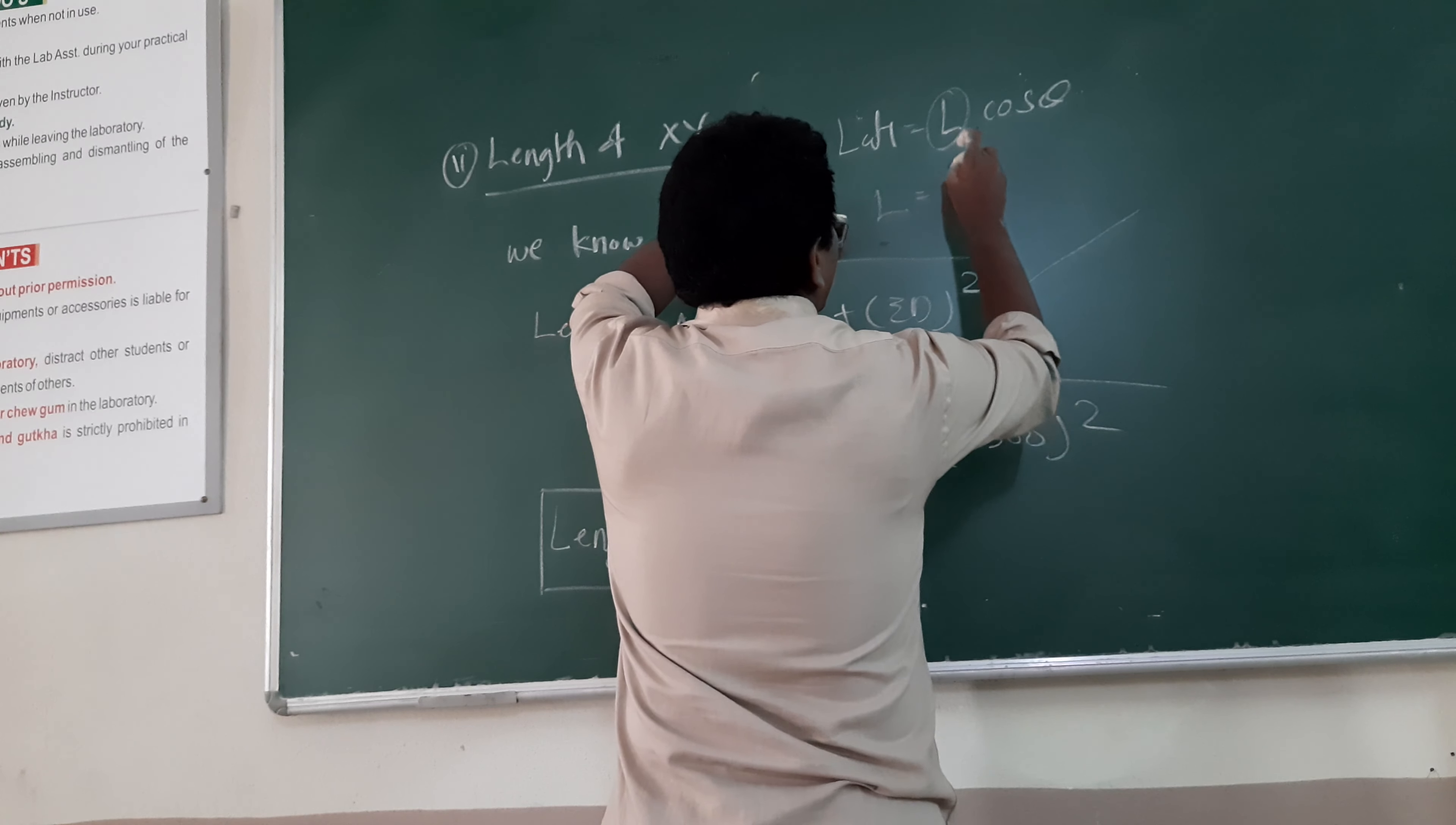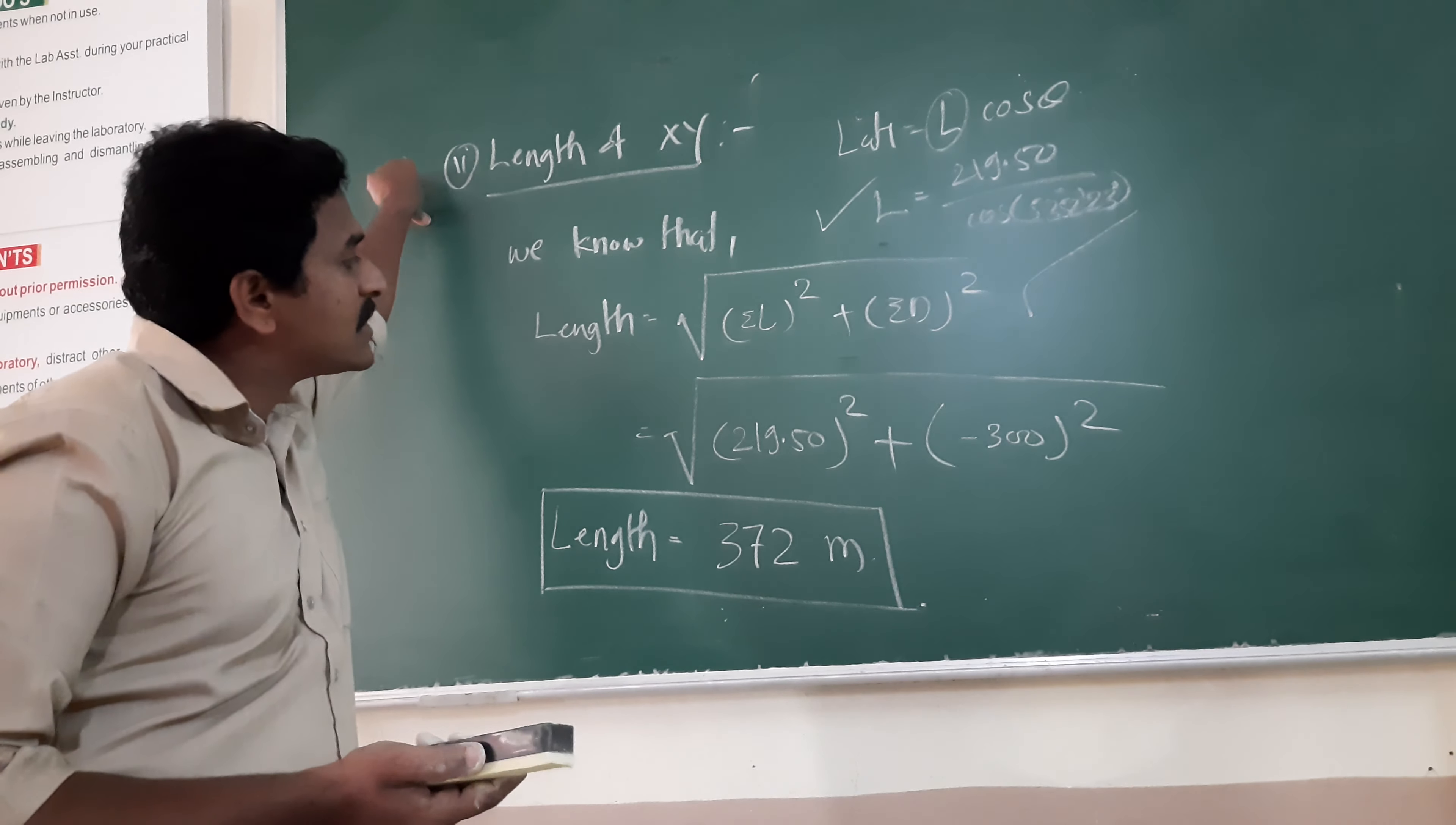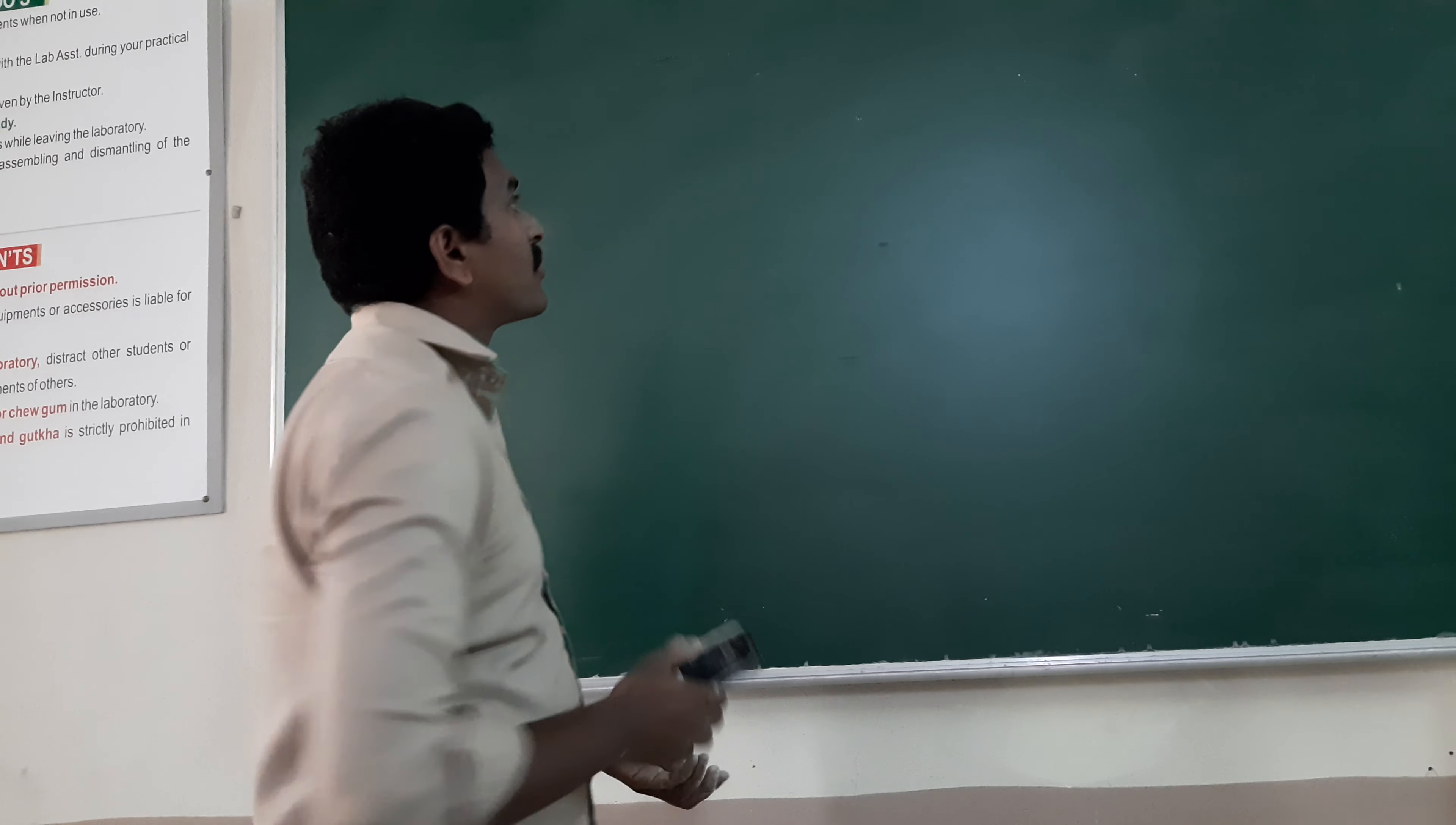Latitude is 290.50 divided by cosine of theta, 53 degrees 52 minutes and 23 seconds. So this is a very simple numerical sum. So we will stop here.